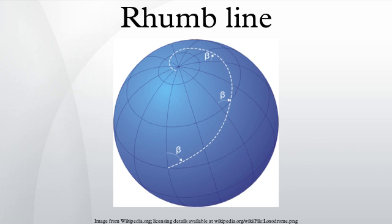A rhumb line can be contrasted with a great circle, which is the path of shortest distance between two points on the surface of a sphere. On a great circle, the bearing to the destination point does not remain constant. If one were to drive a car along a great circle one would hold the steering wheel fixed, but to follow a rhumb line one would have to turn the wheel, turning it more sharply as the poles are approached.